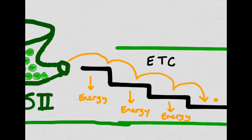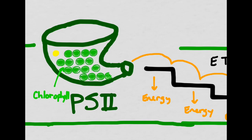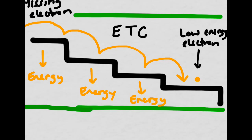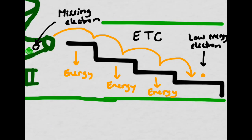In addition, photosystem II is now missing an electron. This electron will need to be replaced in order to continue photosynthesis.